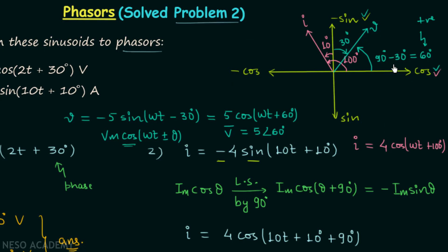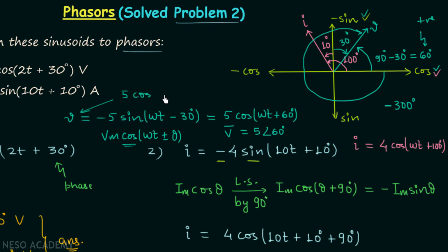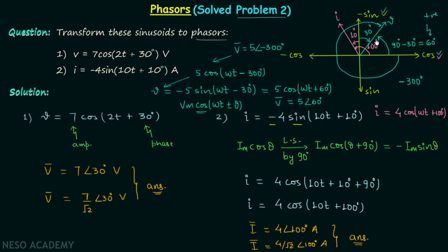We can also travel in the clockwise direction. If we travel clockwise, the angle covered is 180 + 90 + 30 = 300 degrees, and the sign will be negative because we are traveling clockwise. Therefore we can also write V equal to 5cos(ωt − 300°), and the corresponding phasor will be 5∠−300°. I hope the shortcut method is clear, and I will end this lecture here — see you in the next one.